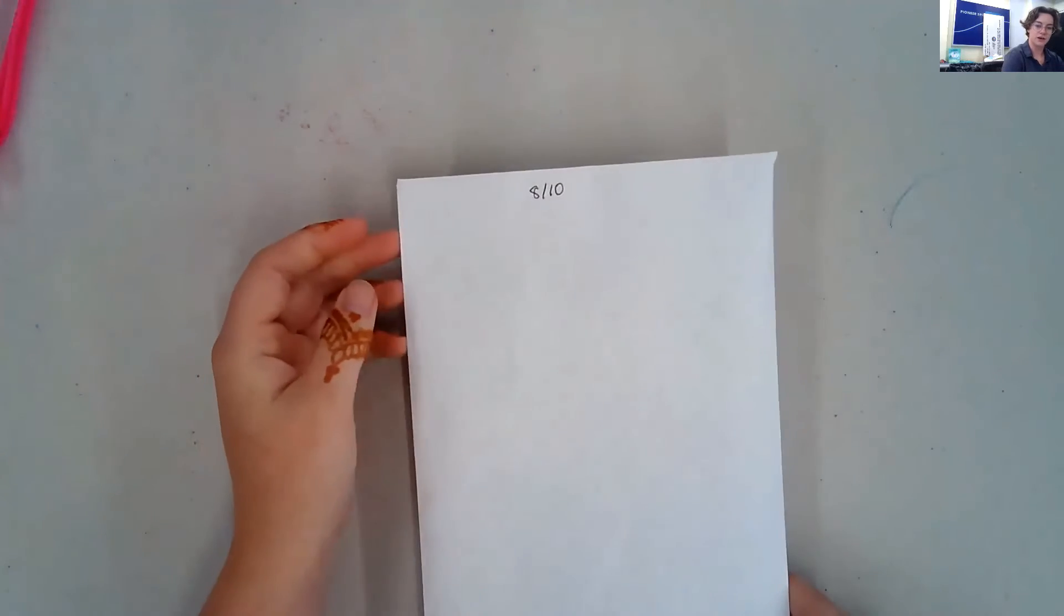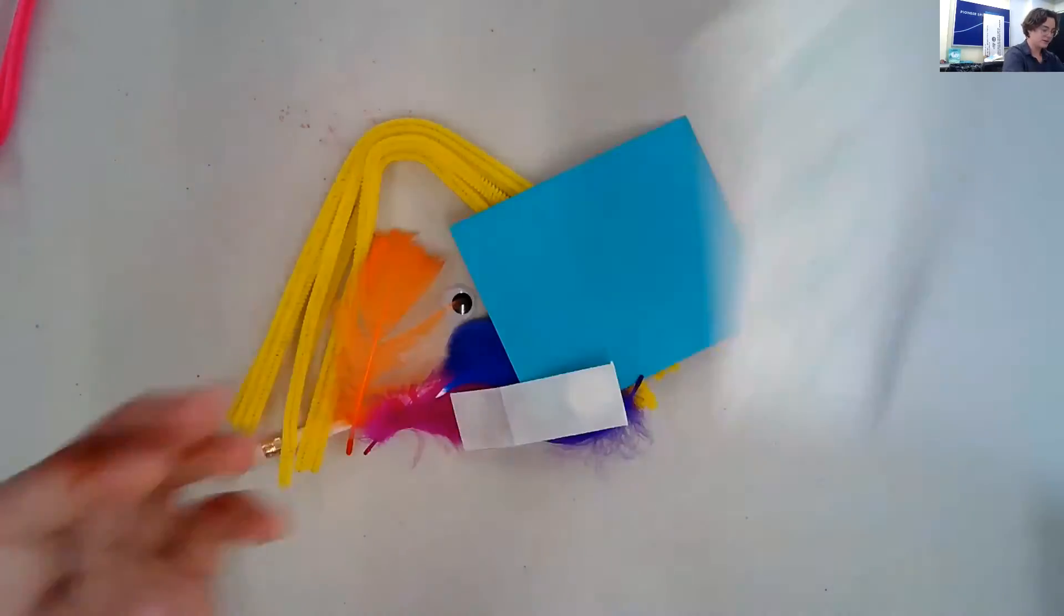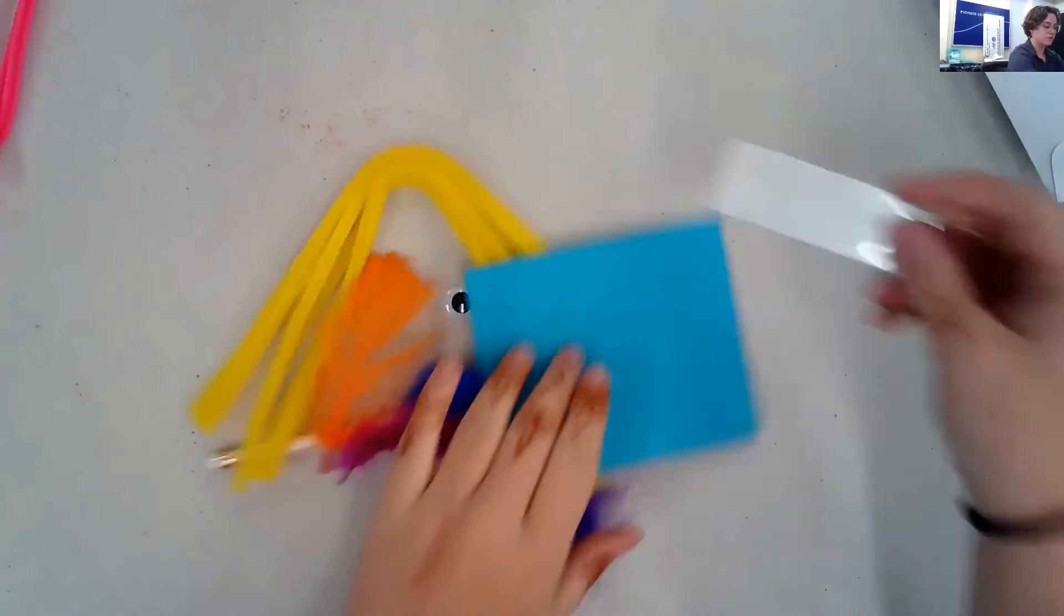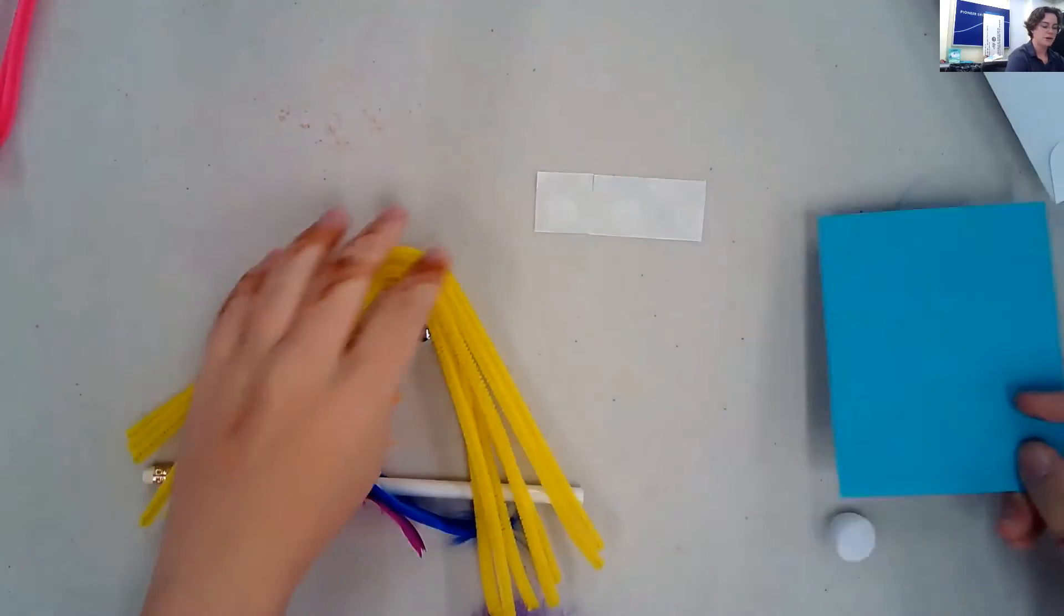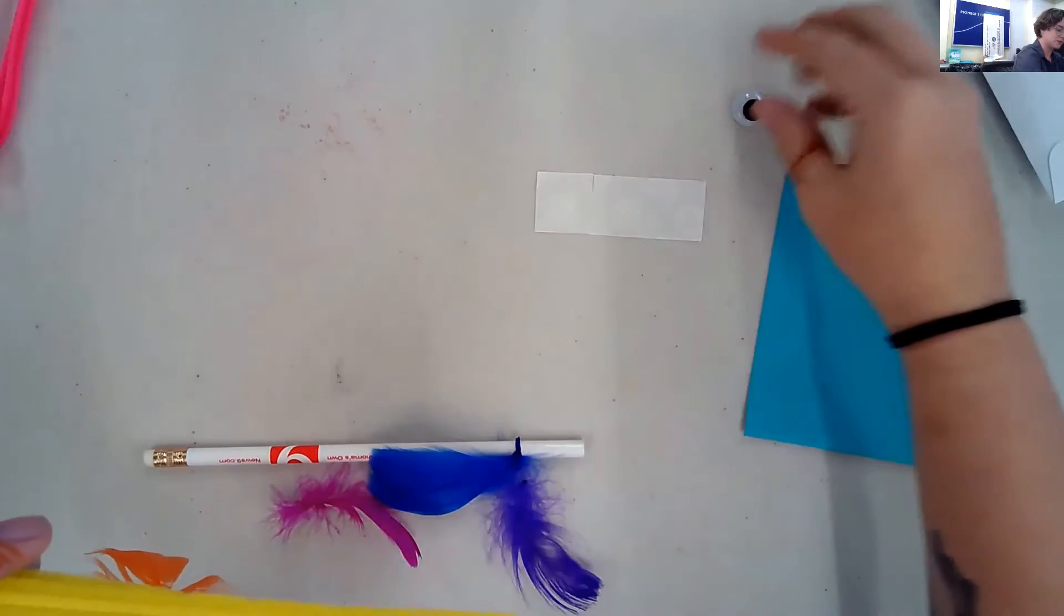Alright guys, we're going to be making our own pet today. For the August 10th craft kit, you're going to want to pull out your items. I have googly eyes and some glue dots. You're going to need three glue dots or glue stick, paper, feathers, and googly eyes.